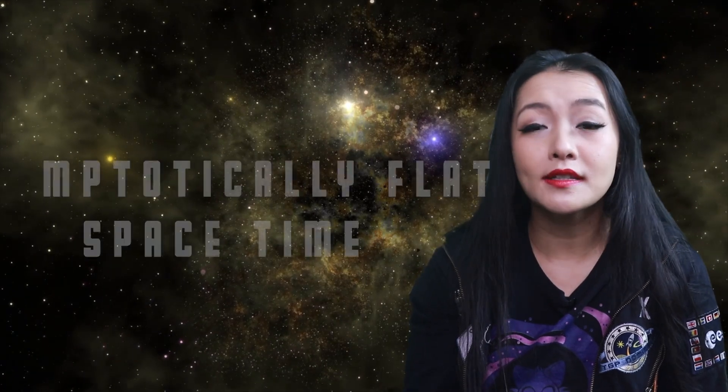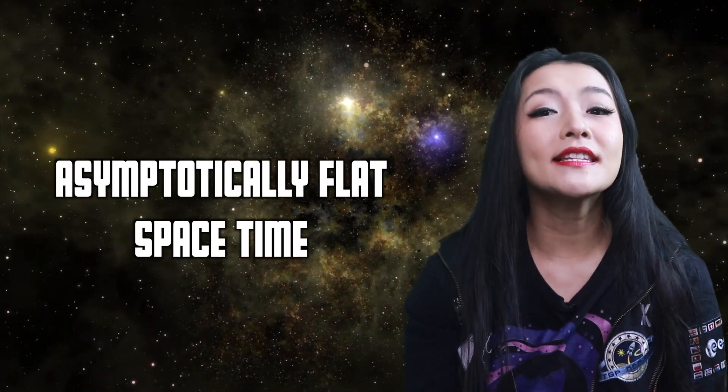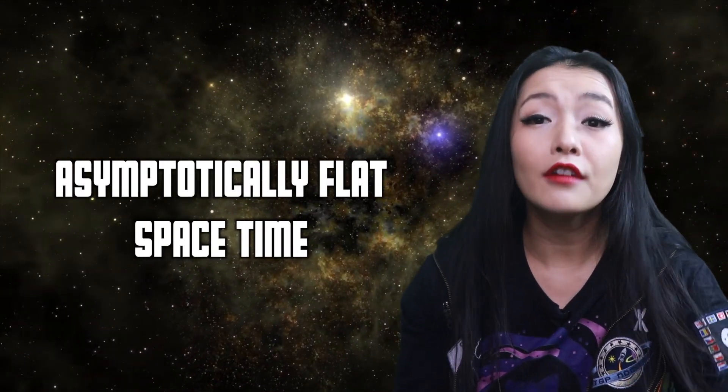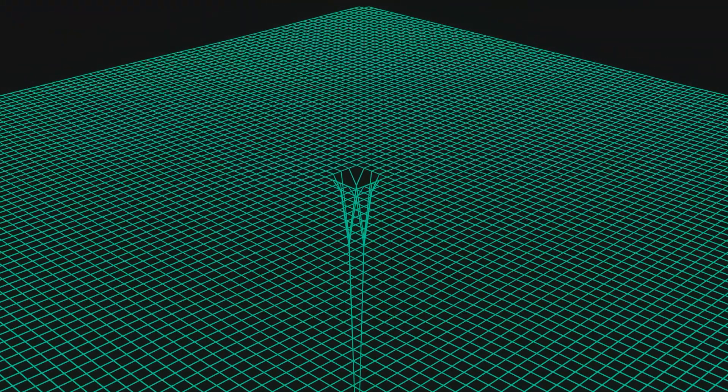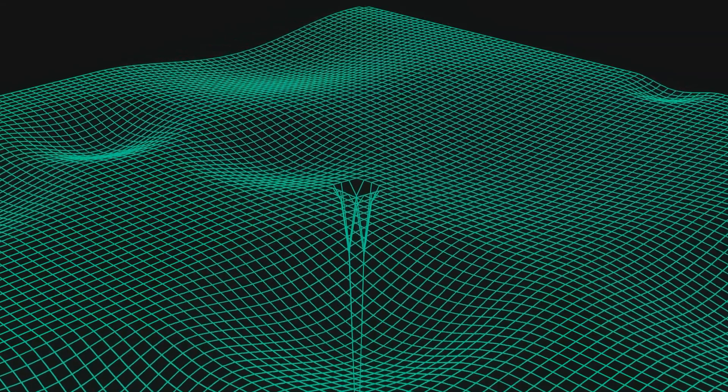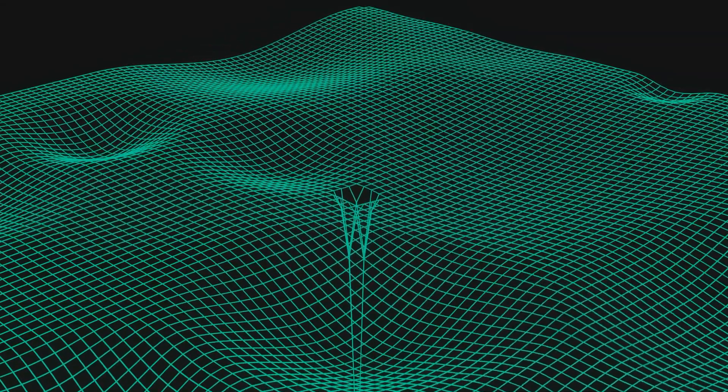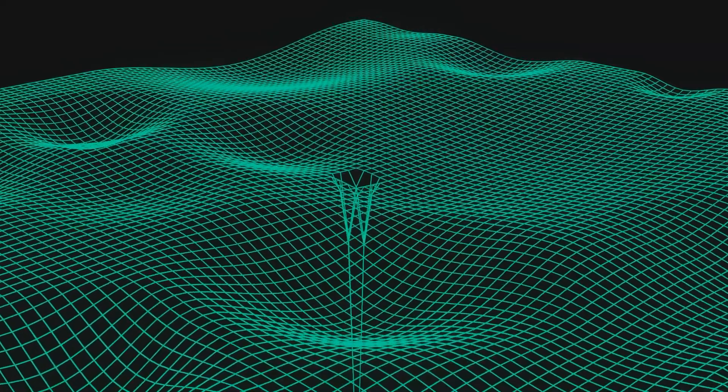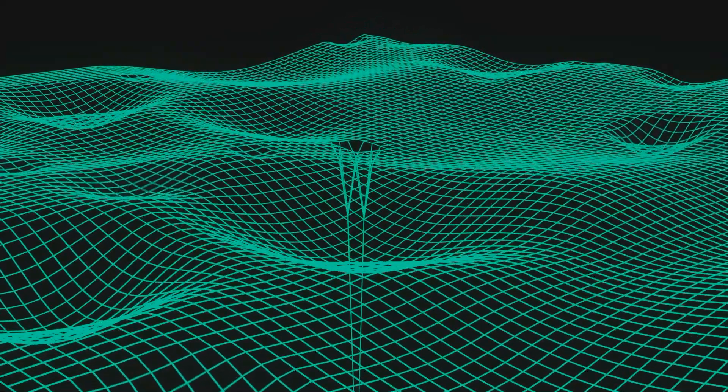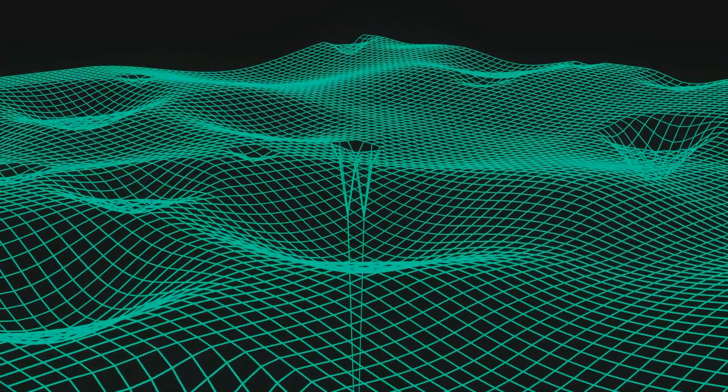Another problem is that they're based on the assumption of an asymptotically flat space-time. This means that if you get far away enough from a black hole, its gravitational influence should be negligible and space-time looks more and more flat. But we know in nature that space-time is not flat, it's curved. And black holes are definitely not isolated systems.